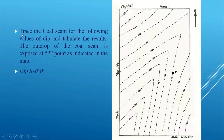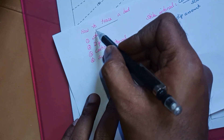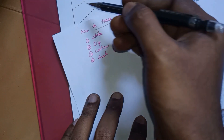The exercise is: trace the cold stream or bed or the formation for a given dip value. The outcrop of the cold stream is exposed at peak point P, as indicated on the map. We are now going to see how to trace a bed.